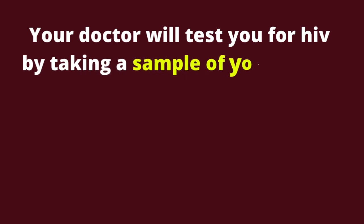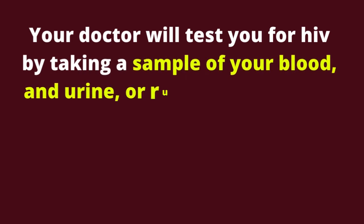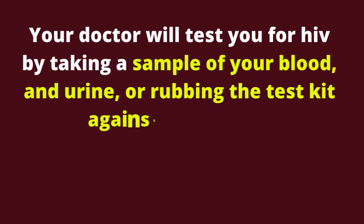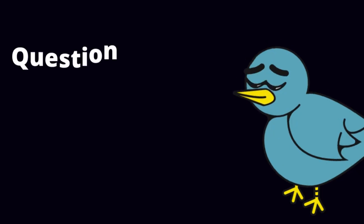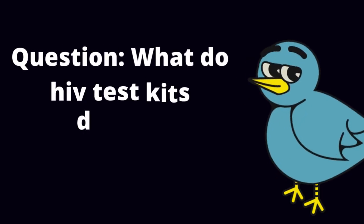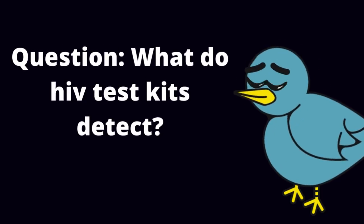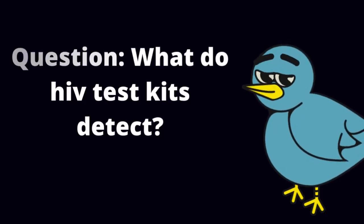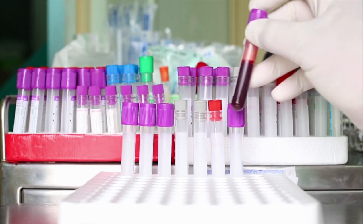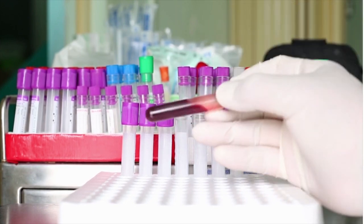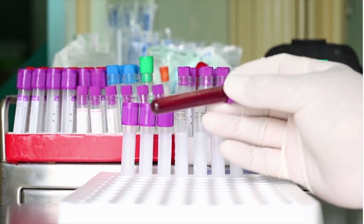Question: How is HIV tested? Your doctor will test you for HIV by taking a sample of your blood and urine, or by rubbing the test kit against your gums.